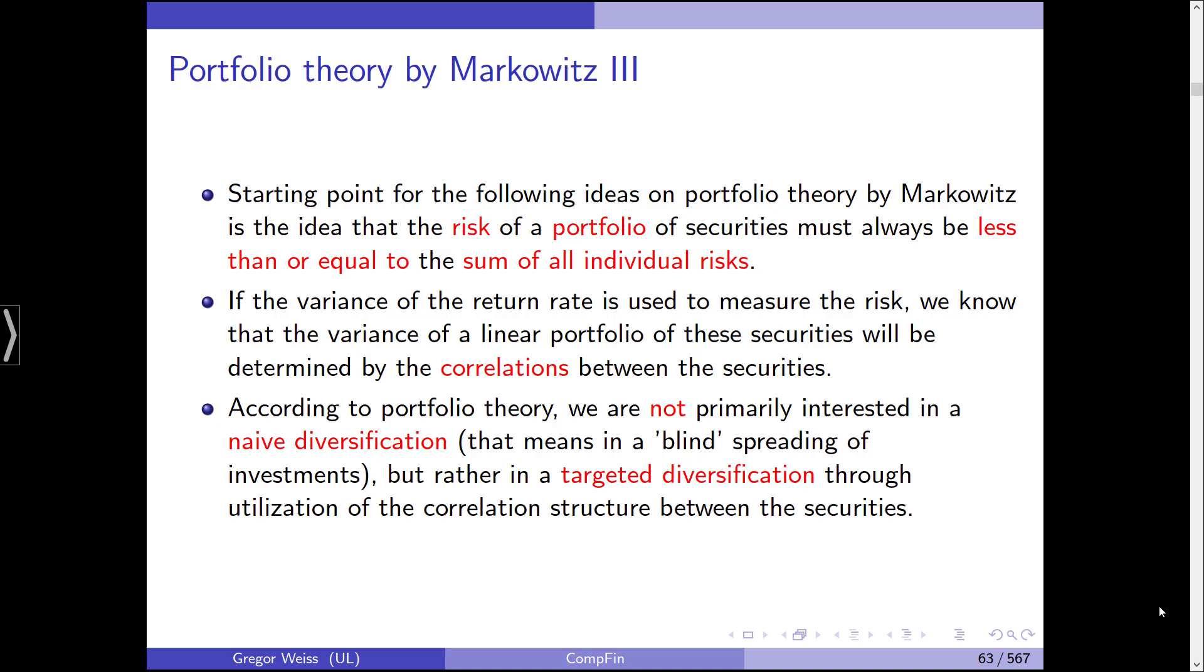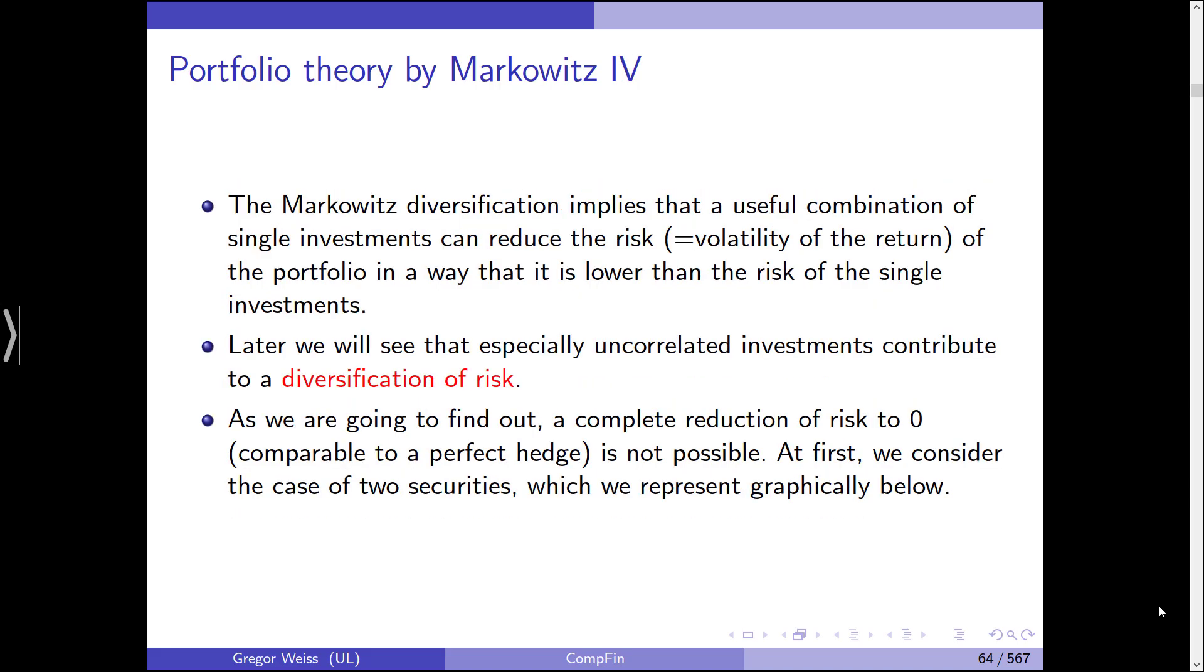So we are looking at a targeted diversification, not a naive diversification. And in order to achieve this, we need to exploit the correlation structure between the securities. Markowitz diversification implies that a useful combination of these single investments can lead to a reduction in the overall risk of our portfolio. And that is a reduction in the variance of the return on that portfolio. And later we will see that especially uncorrelated or ideally even negatively correlated investments lead to such a diversification of risk.